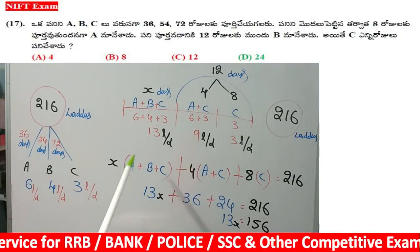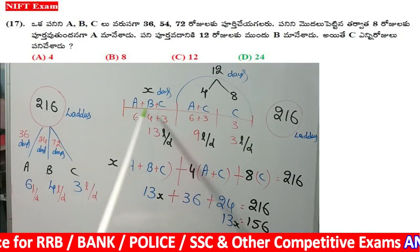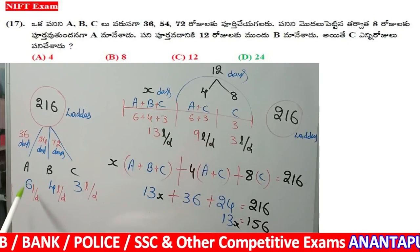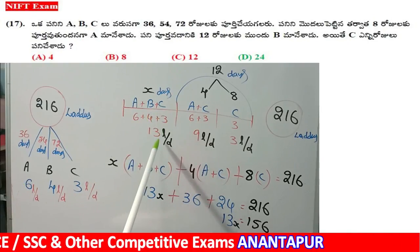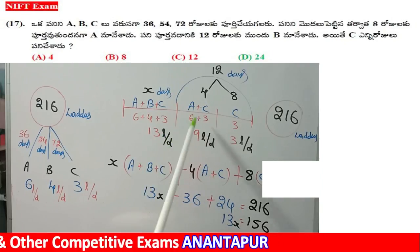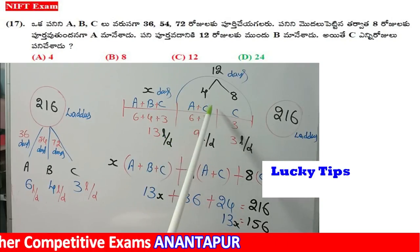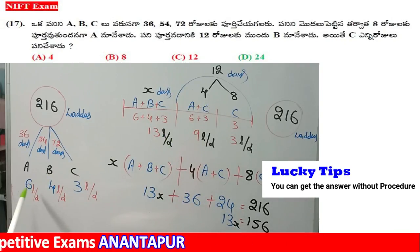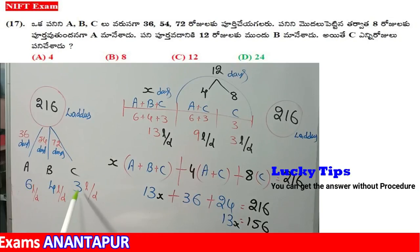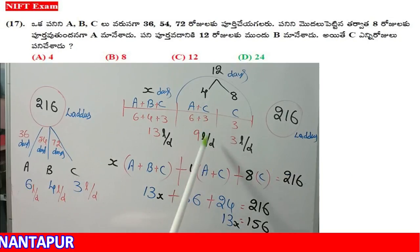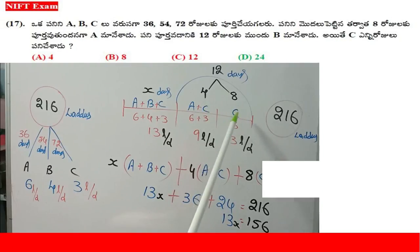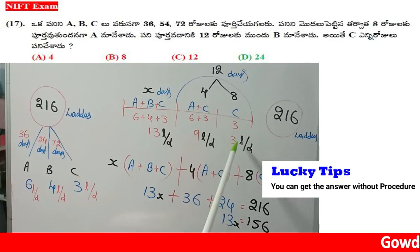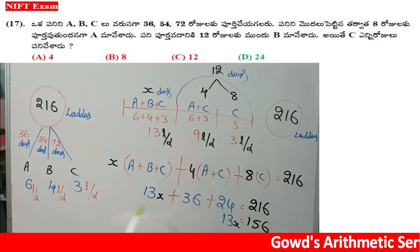Now we are going to govern this. It is 6, 4, 3. Total 13. New laddus: 5. Then A plus C — any laddus: 6. Then A plus C as the way: three laddus. C equals 3 laddus. Total 216. Equal. Okay.